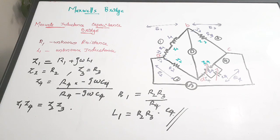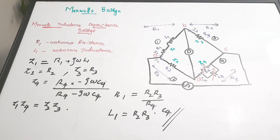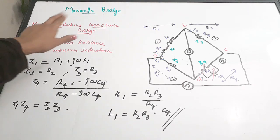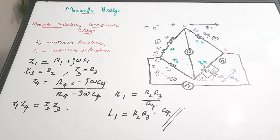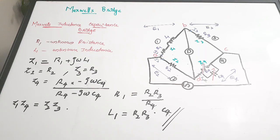To summarize, Maxwell's bridges are mainly used for finding unknown inductance values. In the first type only inductance is used (besides resistances), while in the second type both inductance and capacitance are used. The Maxwell's inductance capacitance bridge is also called the Maxwell–Wien bridge. If you found the video useful, please give it a thumbs up, share it with friends, and subscribe to the channel.